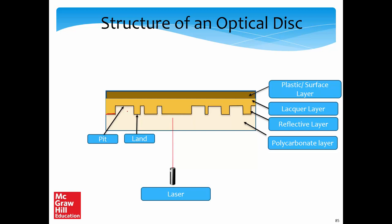These structures are called lands and pits. Pits are basically holes, and lands are places where holes are not present. Lands typically have a much higher reflectivity, so they reflect the signal back and a receiver can figure out that it is a land. Pits, in contrast, have a lower reflectivity and also induce a phase change. From the pattern of reflected light, a receiver can determine whether it is getting a reflection from a land or a pit.